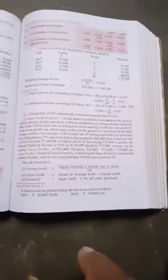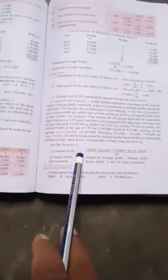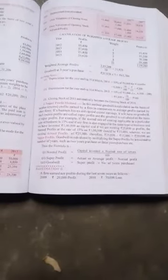That is we have deducted and we have gained the 10,000 super profit. This is the formula. The normal profit is called capital invested into normal rate of return upon 100. Super profit is actual or average profit minus normal profit. Goodwill is called super profit into number of years purchased.